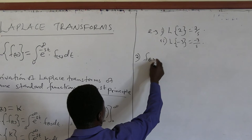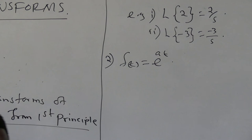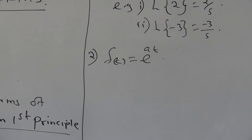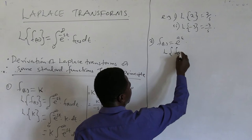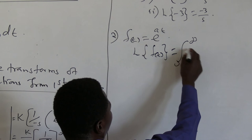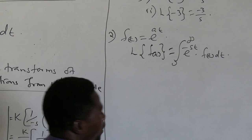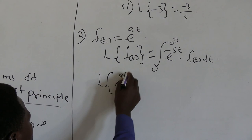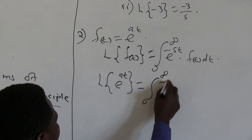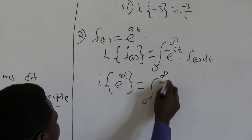Number 2: f of t equals to exponential e power at. That is the second standard function for which we want to get the Laplace transform. Following the same formula from the definition, the Laplace transform of f of t is equals to integral from 0 to infinity of exponential e power negative st times f of t dt. In this case, the function of time is exponential e power at, so the Laplace transform of e power at becomes the integral from 0 to infinity of e power negative st times exponential e power at dt.